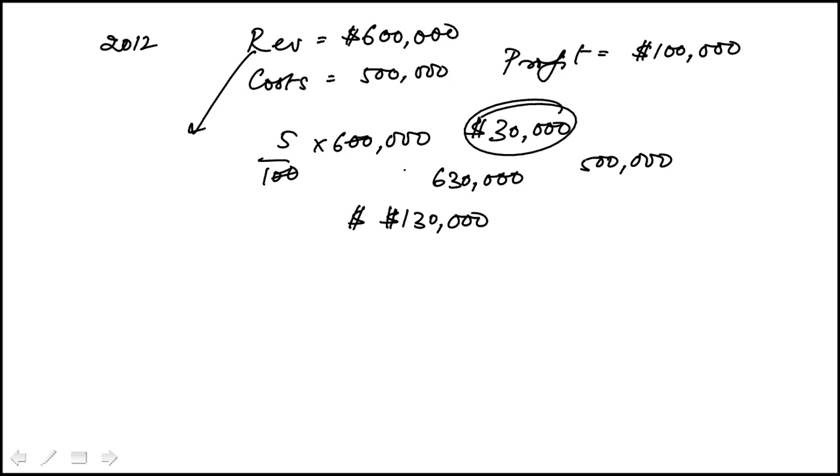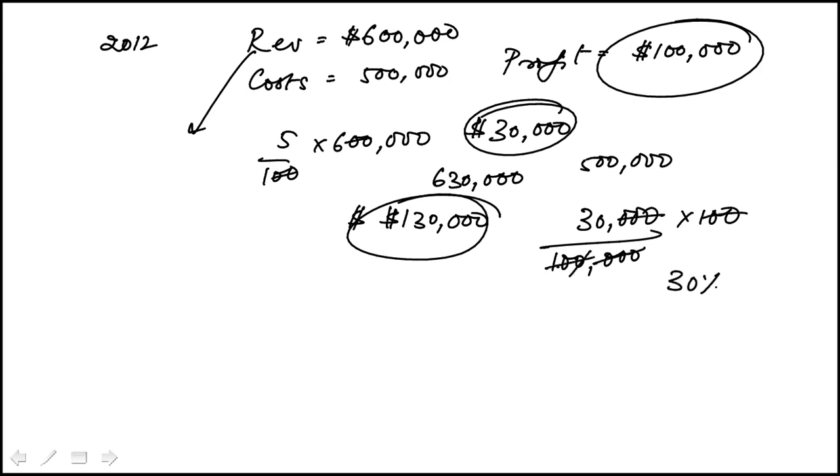Now they're asking, what was the percent change in the company's profit? So $130,000 increased from $100,000. Increase is $30,000 and we need to find $30,000 as a percentage of the original. And you will see that this turns out to be 30%, which is choice D.